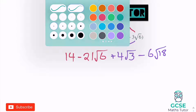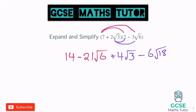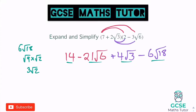We've got an interesting one here. We've got 14 at the start, no number at the end. We've got 21 root 6 — that doesn't simplify. 4 root 3 — that doesn't simplify. And then this 6 root 18 — root 18 does simplify, so let's see what happens. 6 root 18: root 18 is root 9 times root 2, which is 3 root 2. And remembering that's 6 lots of 3 root 2, so that's 18 root 2.